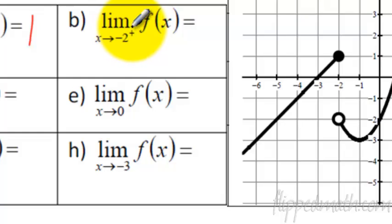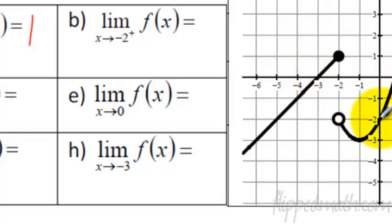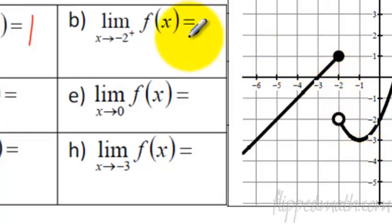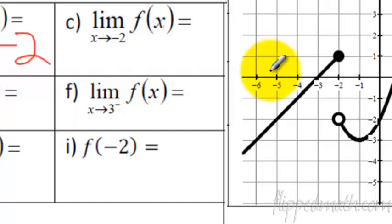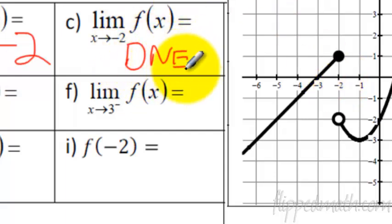Letter B: notice the little exponent thing has a positive. That means we're coming from the right side — from the positive side. It doesn't mean we head in the positive direction; we start right of negative 2 and come back to it. We're going towards negative 2, and the y value is also negative 2. Now, negative 2 with nothing in the exponent means you're talking about both sides. Since the left side does not equal the right side at negative 2, the limit does not exist.